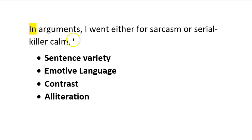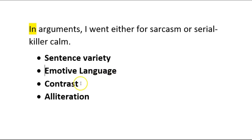You'll notice a shorter sentence here — a much more direct one — and writers do that all the time. They change the sentence variety to give their writing energy. Because if you can predict what's coming next, you become lazy about reading it; it feels like lazy writing. But if you keep changing the types of sentences the reader gets, it just disrupts the rhythm and makes it much more interesting to read. 'So in arguments, I went either for sarcasm or serial killer calm.' The sentence variety I've talked about — it's easy to spot the emotive language in there. You've got the contrast again between sarcasm or calm.